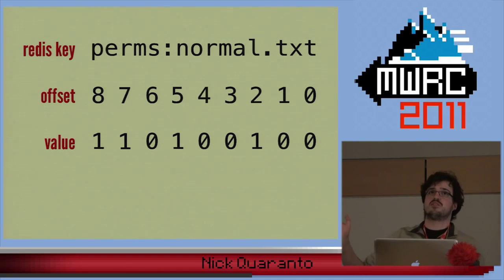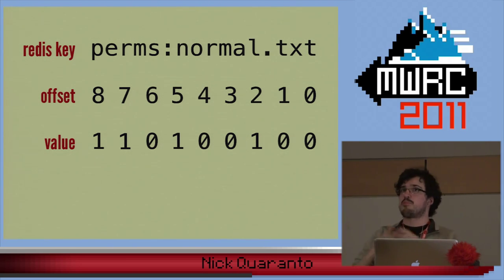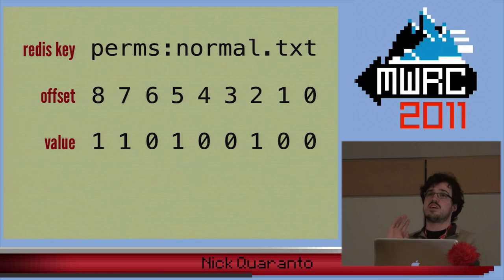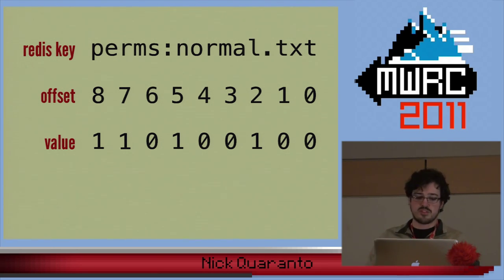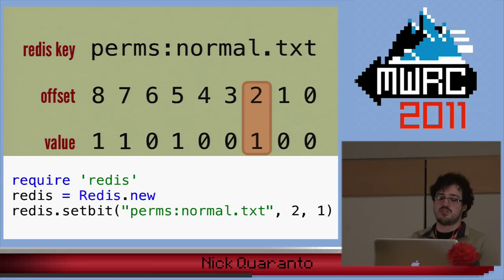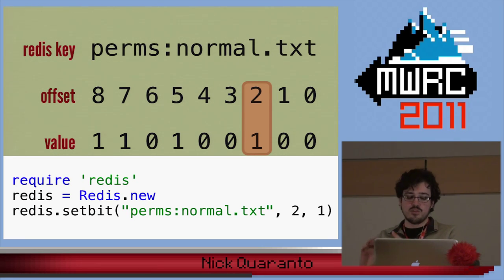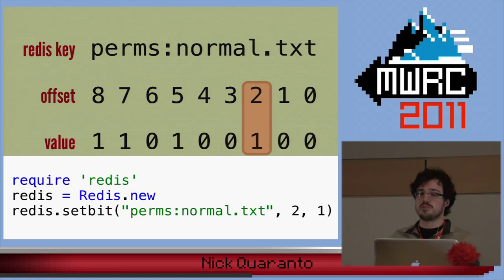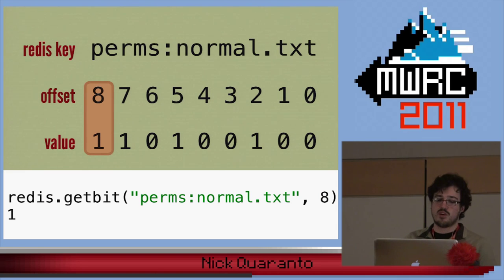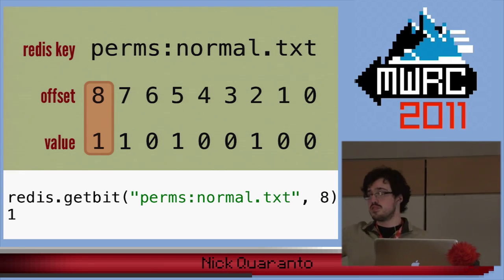Visually, this is what I want inside of Redis. I want at my Redis key — perms:normal — at a certain offset, I'm going to set a value. This is a common pattern with Redis: there's a delimiter, so at my perms namespace I've got this file name. I'm going to bring in the Redis gem, create a new instance connecting to the Redis server at localhost, and then set it. I'm going to setbit for the key perms:normal.txt, offset 2, value 1. Simple and done. And if I want to retrieve that back out, it's getbit — if I want the bit at offset 8, I yank that out.